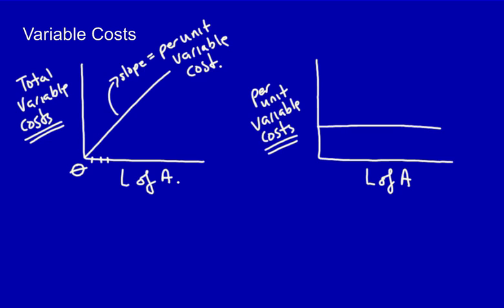Variable costs. An example of a variable cost would be the direct material that you actually use or consume in order to produce a product. It could also be the amount of labor that has to be consumed in order to produce one unit of product. Both of these are variable costs, because if we produce no units, we're not going to use any direct materials, and we're not going to use any labor.